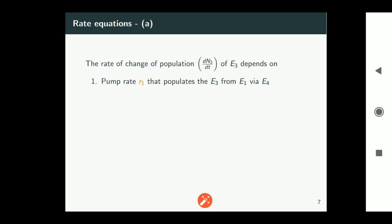Now let us write the rate equations containing only e2 and e3. So rate of change of population of e3 depends on many factors. We are going to list one by one. The pump rate r1 that populates e3 from e1 via e4. That's r1 is the important thing.